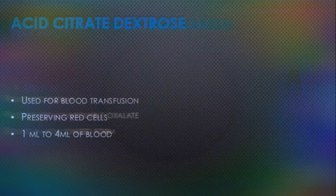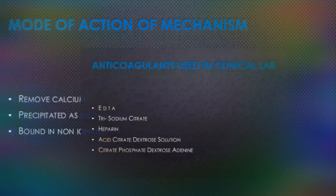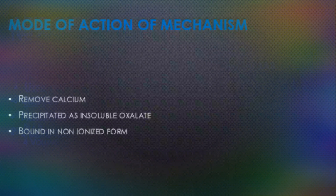To summarize the mode of action: EDTA and sodium citrate remove calcium, which is essential for coagulation — calcium is either precipitated as insoluble oxalates or bound in a non-ionized form. Heparin neutralizes thrombin by inhibiting the interaction of several clotting factors in the presence of the plasma cofactor antithrombin III. Sodium citrate or heparin can also be used to render blood incoagulable before transfusions. The four main anticoagulants used in clinical labs are EDTA, trisodium citrate, heparin, and blood bank anticoagulants such as ACD or CPDA-1 (citrate phosphate dextrose adenine).